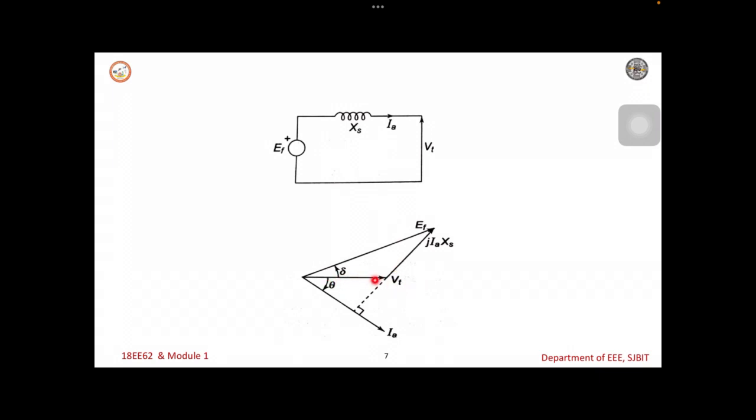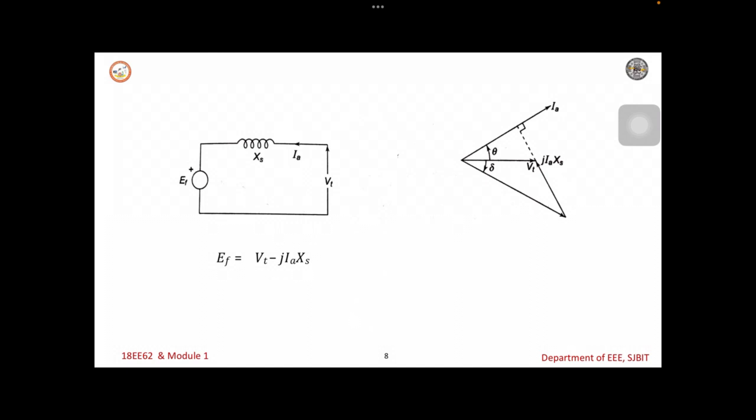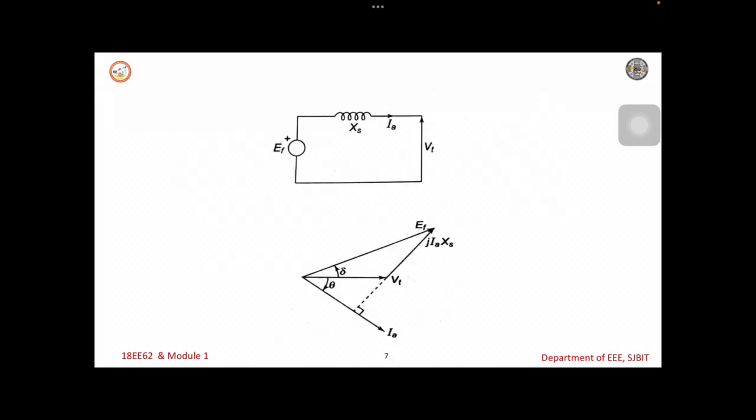Thereafter we can write the phasor diagram like this, that is Vt. Vt is the terminal voltage. The drop is I into X, that is IA into XS. The sum of these two phasors will be the induced voltage that is EF. Current lags with respect to terminal voltage by an angle of theta. Similarly we can write this EF in the same lines. If it is capacitive or inductive, depending on that we can write the phasor diagram.